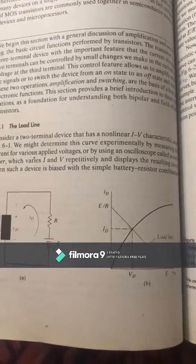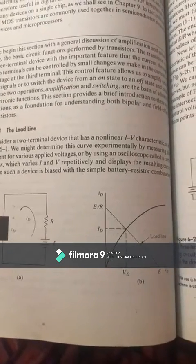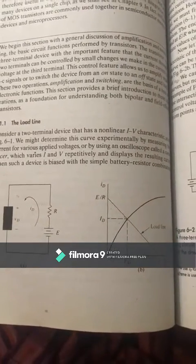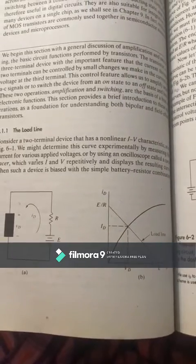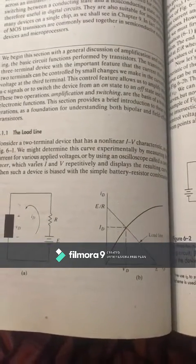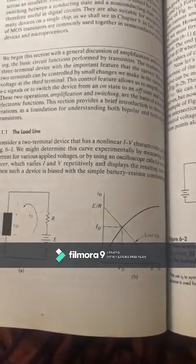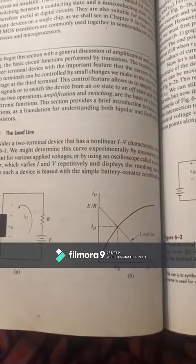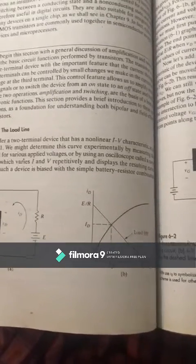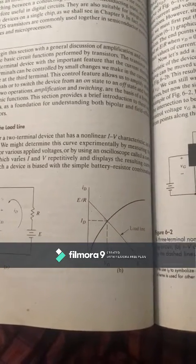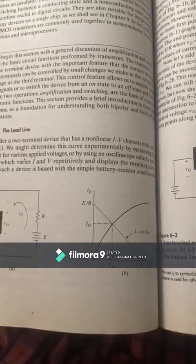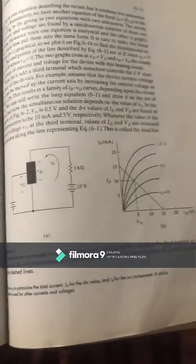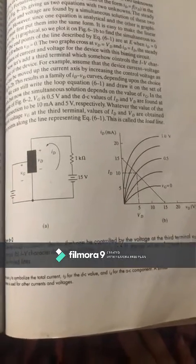This lecture covers FET operation. First, recalling last week's two-terminal device: as drain voltage changes, drain current increases, and then levels off after a certain point.